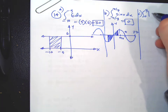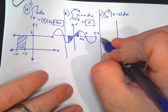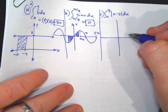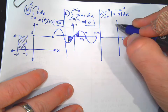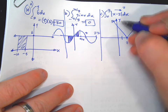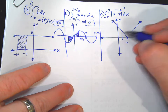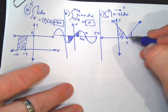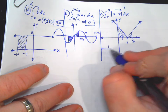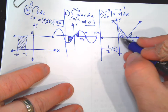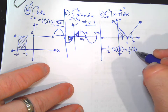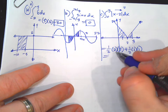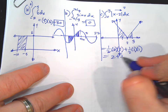Part c: integrate from 0 to 3 of |x - 2| dx. It's a V-graph shifted two units right — the vertex is at (2, 0). From 0 to 2: big triangle with base 2 and height 2 (plugging in 0 gives 2). One-half times 2 times 2 equals 2. From 2 to 3: small triangle with base 1 and height 1. One-half times 1 times 1 equals one-half. Total: 2 + 1/2 = 5/2.